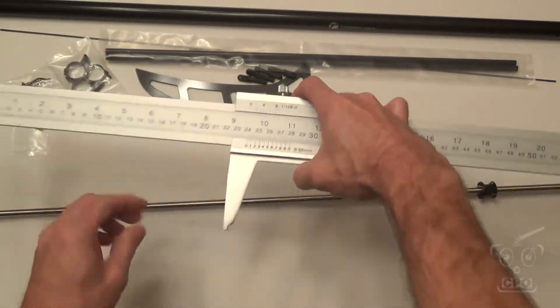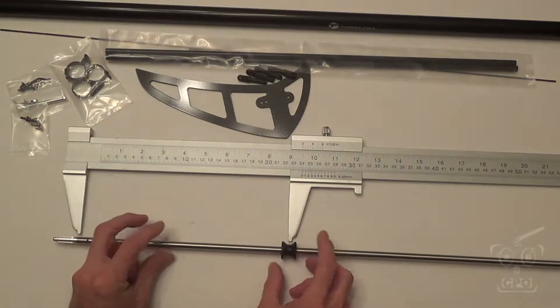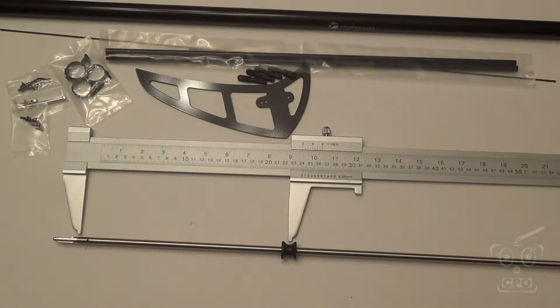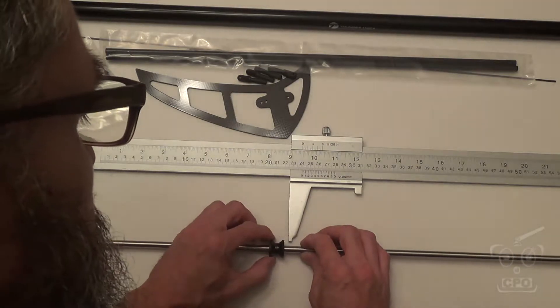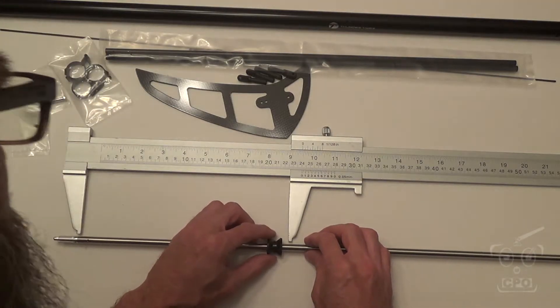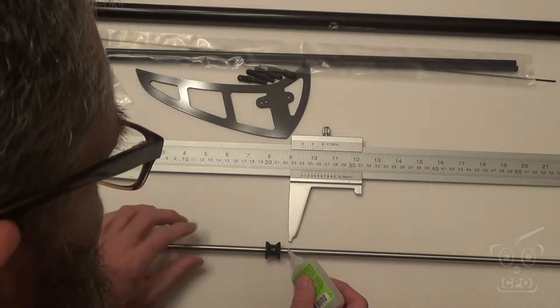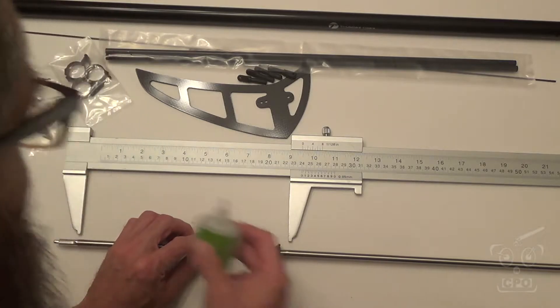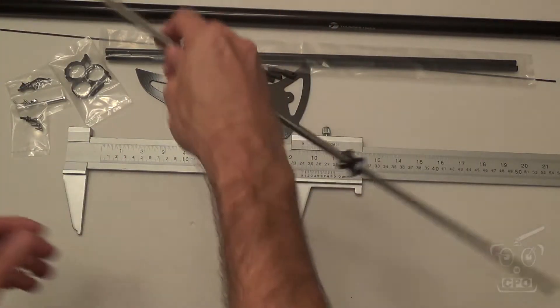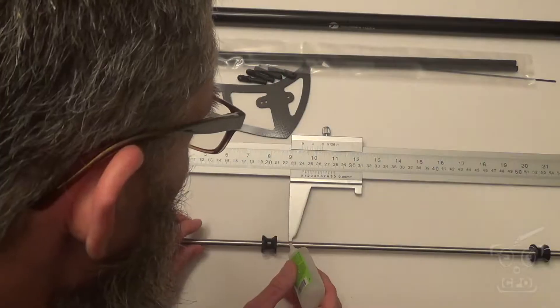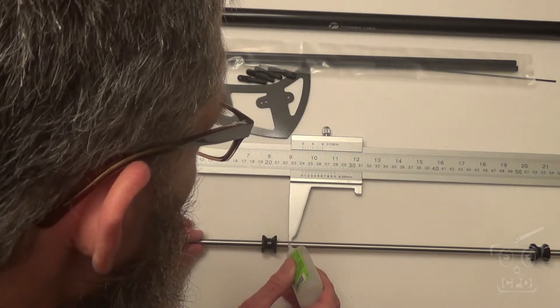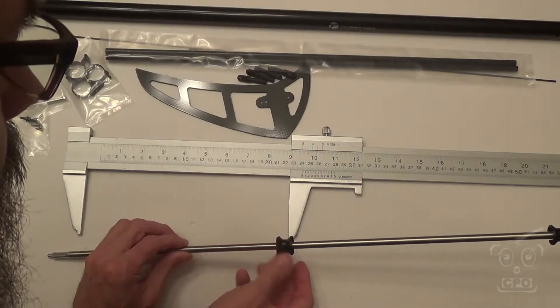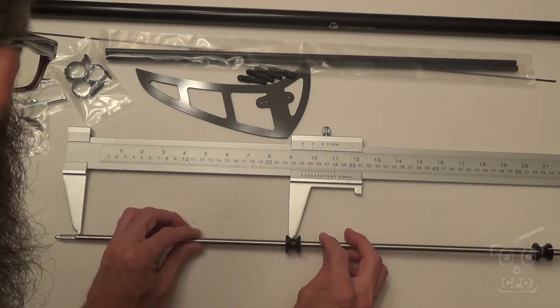So I'm going to set this for 240, and then measure from, again, the end of the tube, not the actual length. And I'm just going to put some CA right about there, and then slide the bearing over the top of that CA, get it put into place, and then the same thing for this other side. So 240 from both ends.